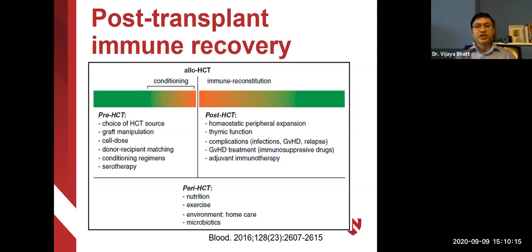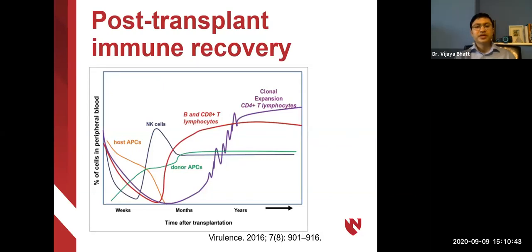After transplant, complications including organ damage to liver or kidneys, infections, graft-versus-host disease, or relapse of underlying cancer can affect immune recovery. Both graft-versus-host disease and its treatment can certainly affect the speed of immune recovery. NK cells can recover a bit faster after transplant, but various types of lymphocytes can take months or years to recover in the absence of graft-versus-host disease, which can further delay recovery of some immune cells.